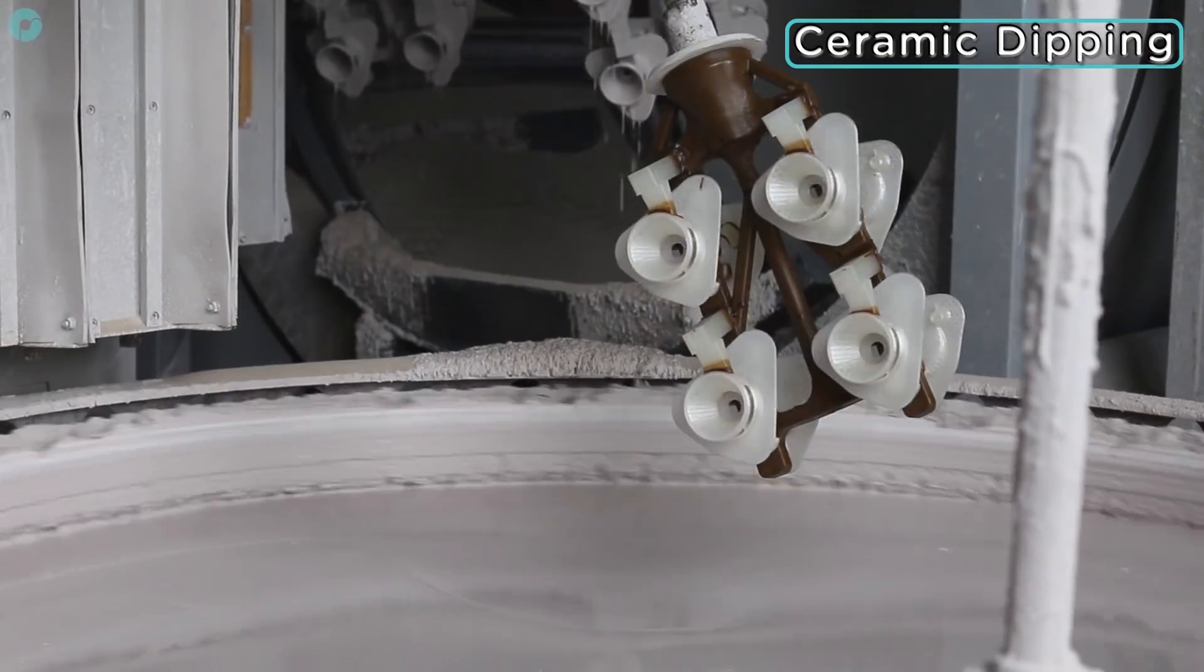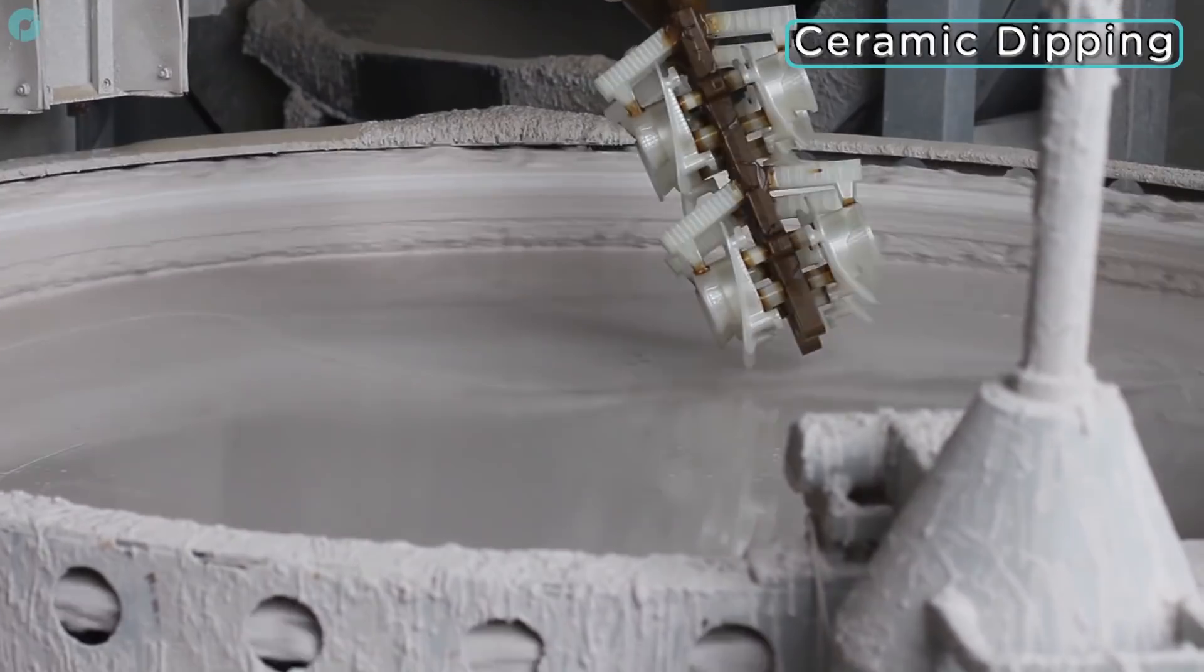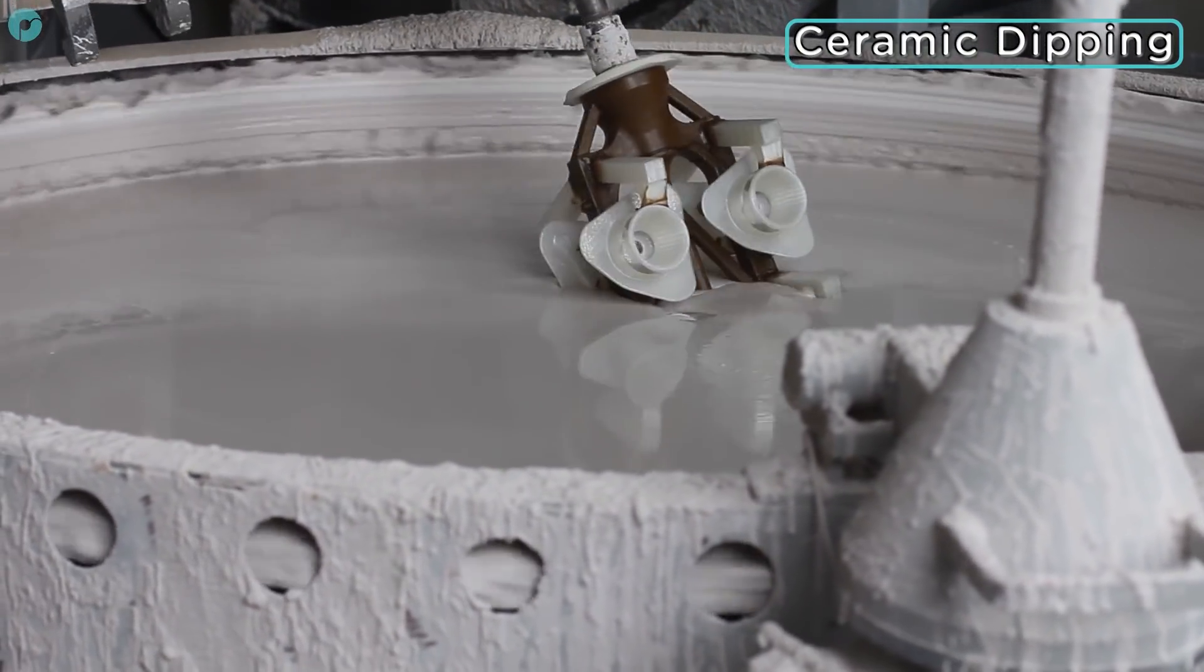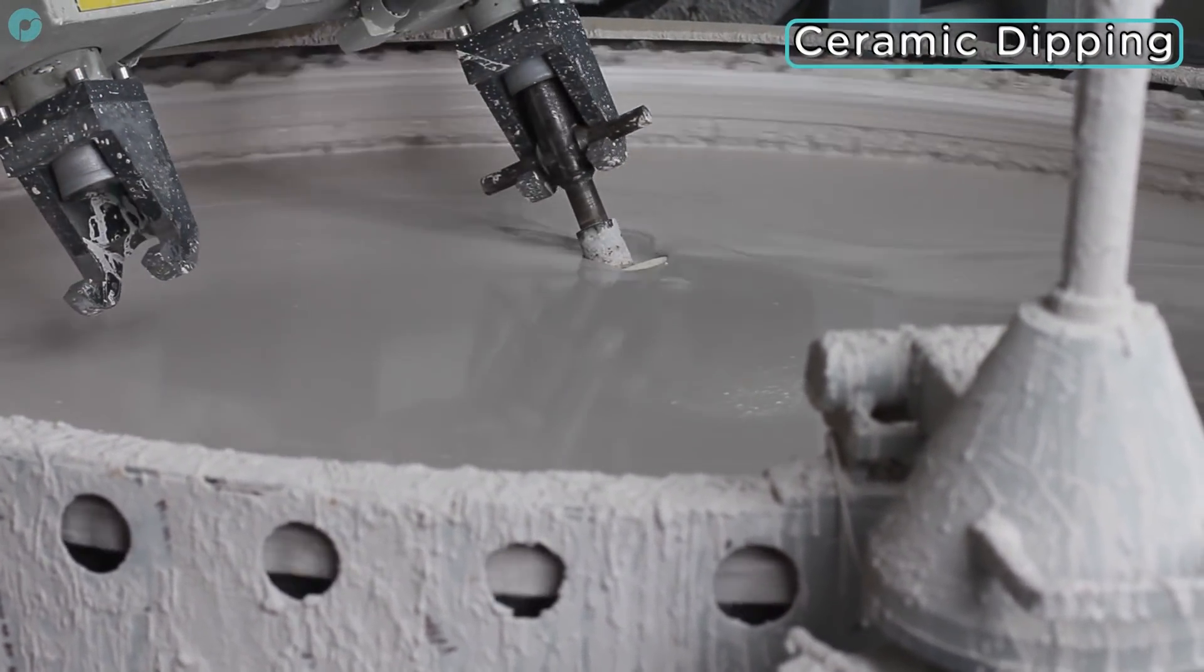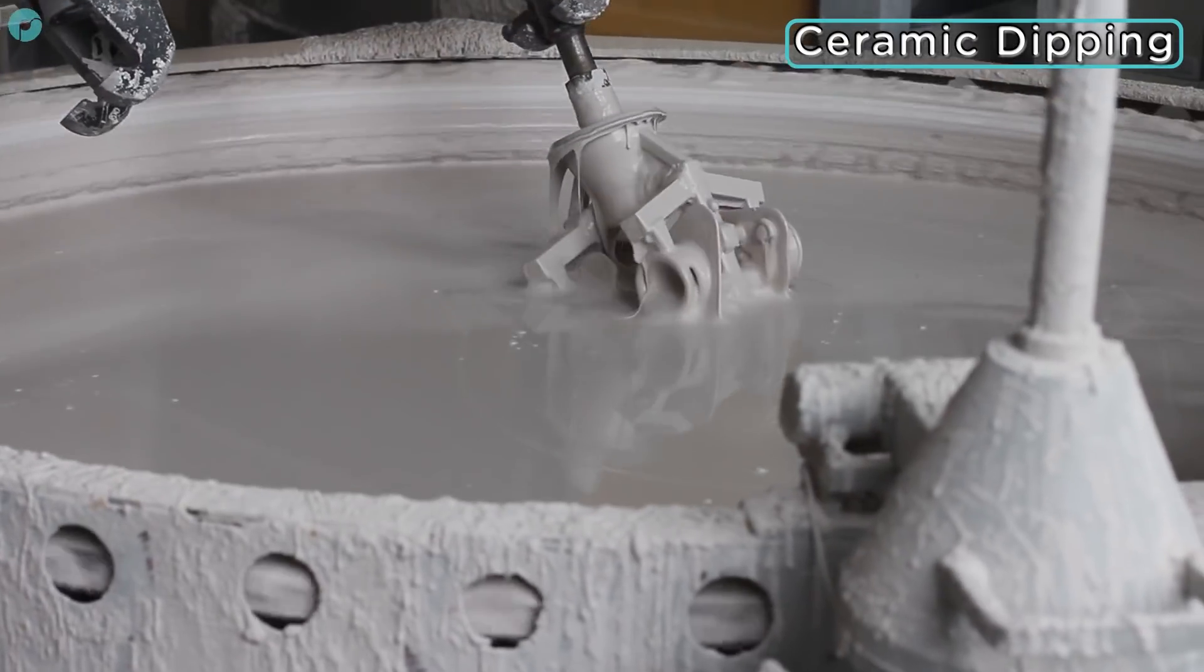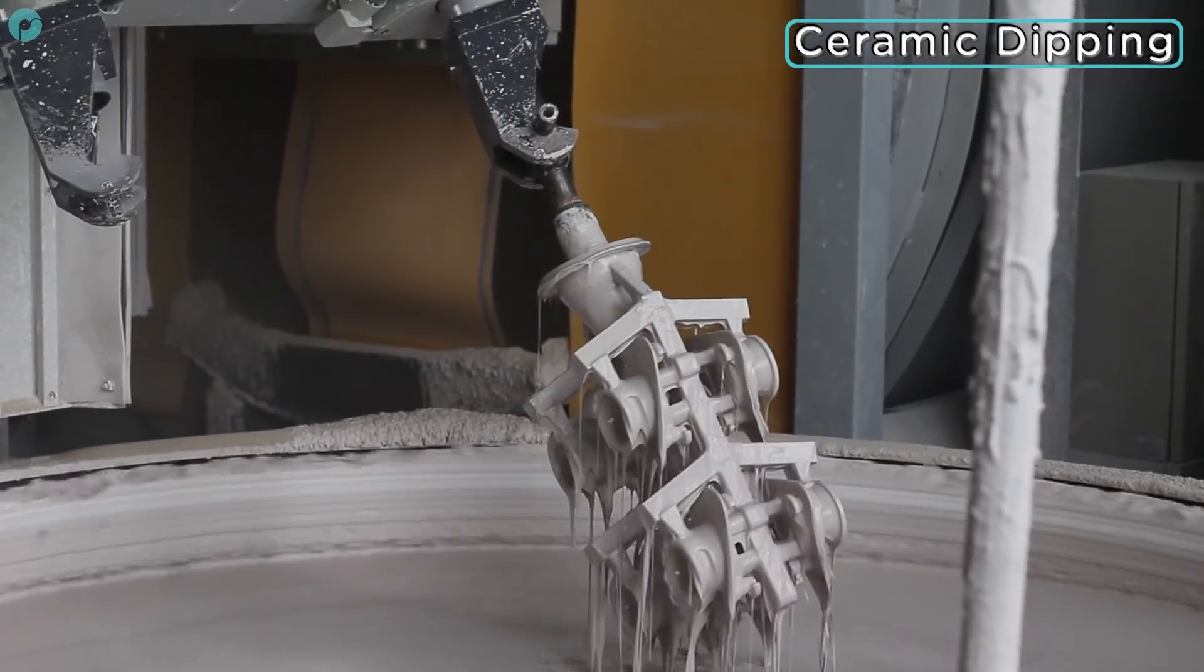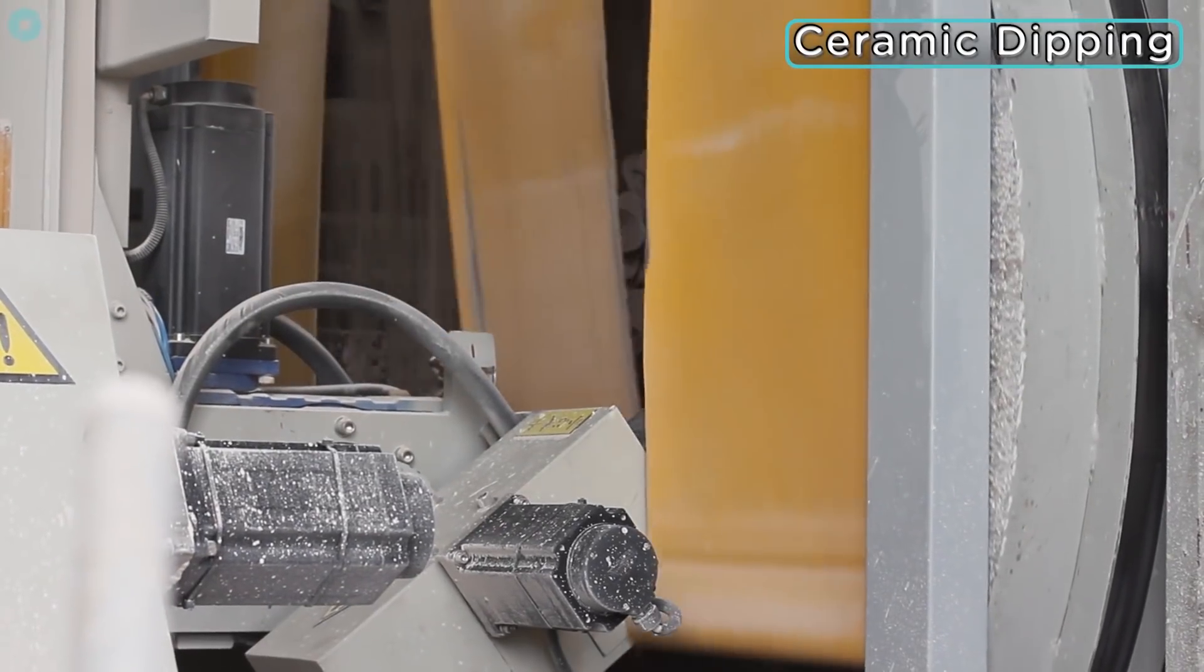The tree can now travel to the dipping station, where it is submerged in a ceramic slurry. This is then showered with a fine silica compound and left to dry before the process is repeated and a sufficient wall has formed around the Polycast prints.